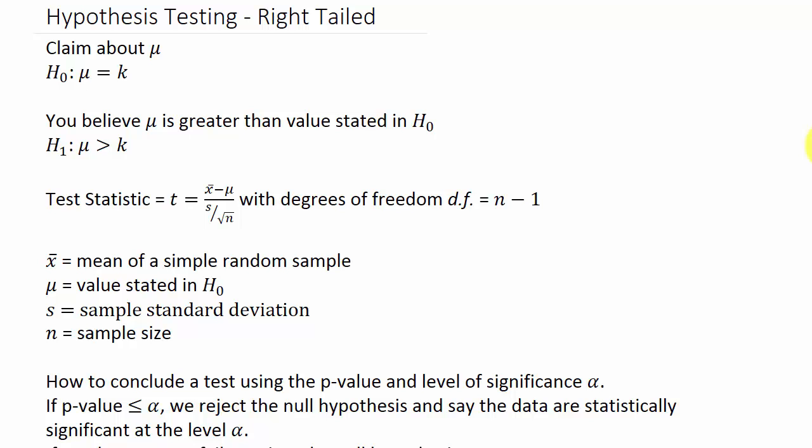In this video we're going to look at hypothesis testing, and this is going to be a right-tailed test where sigma is unknown — we don't know the population standard deviation. In hypothesis testing we can have a one-tailed or a two-tailed test. The one-tailed is either a left-tailed or a right-tailed, and then you've got the two-tailed which is both left and right.